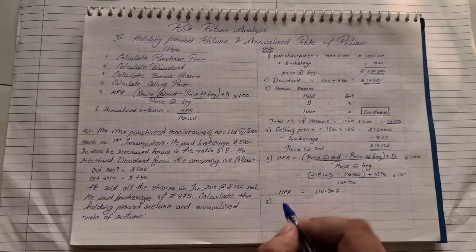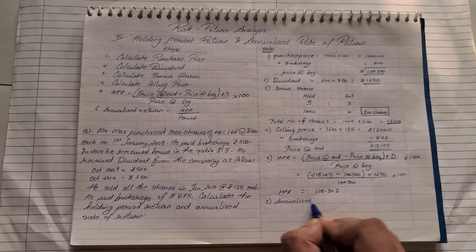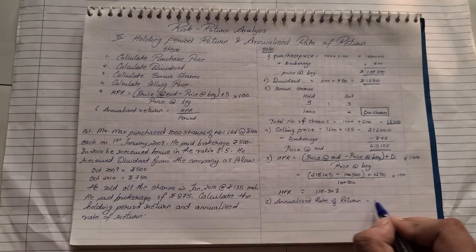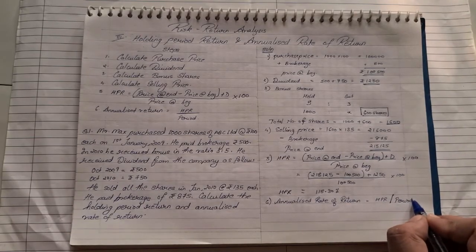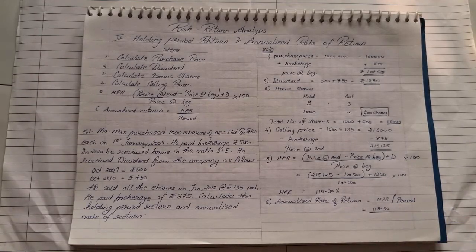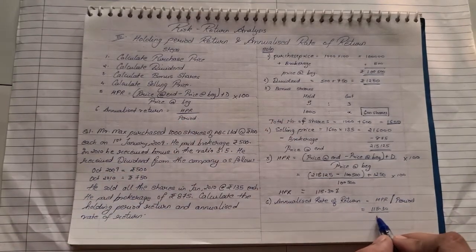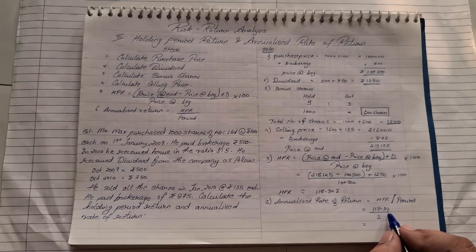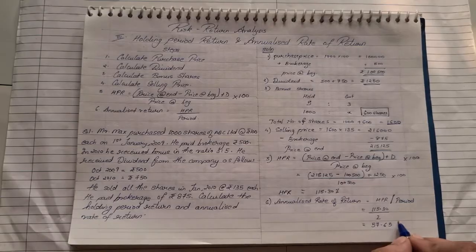Now, last step we need to find the annualized rate of return. The annualized rate of return is nothing but the HPR divided by the holding period. So in our case, it was 115.30 divided by, for how many years did you hold? Now, here they are giving dividend for 2 years, 2009-2010. So for 2 years, we have held it. So the annualized rate of return will be 115.30 divided by 2 which comes to 57.65%.